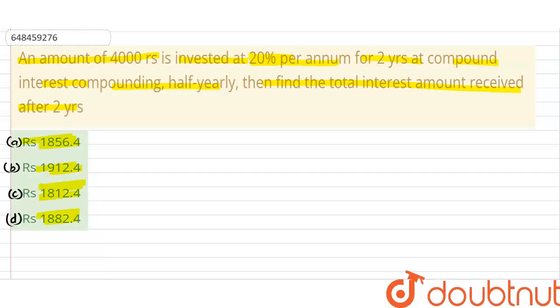So, सबसे पहले यहाँ पर अगर हम देखें, तो यहाँ पर half yearly compound interest हो रहा है. Half yearly condition में क्या होता है, जो rate है, उसे हम कर देते हैं half. So, R by 2, कितना है 20, तो यह हो जाएगा 10%, और जो time होता है, वो हो जाता है double. तो time हो जाएगा हमारे पास 4 years.